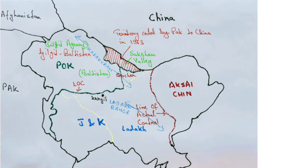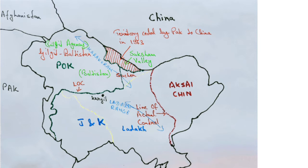You can also see the Siachen Glacier, which I have marked, and the Karakoram ranges and the Ladakh ranges. You can see the Line of Control between Aksai Chin and Ladakh. I have marked Ladakh and Jammu & Kashmir as separate territories because recently, after the abrogation of Article 370, the state of Jammu & Kashmir got divided into the union territories of Jammu & Kashmir and Ladakh. I have also marked Kargil, which is famous because the Kargil War took place between India and Pakistan.